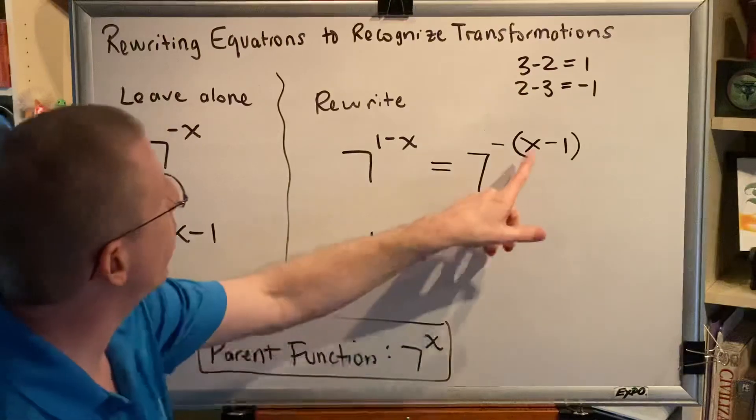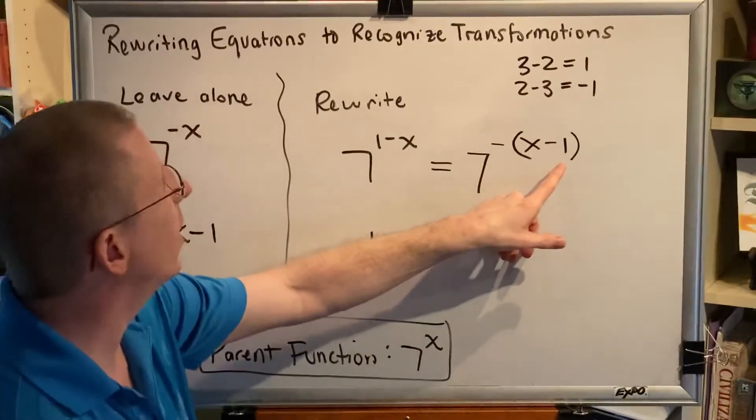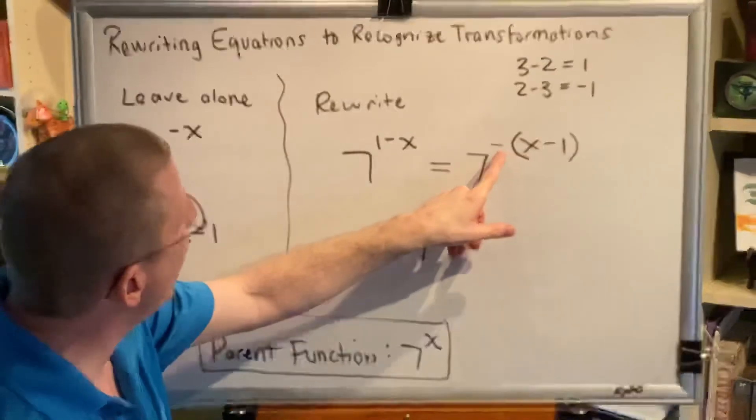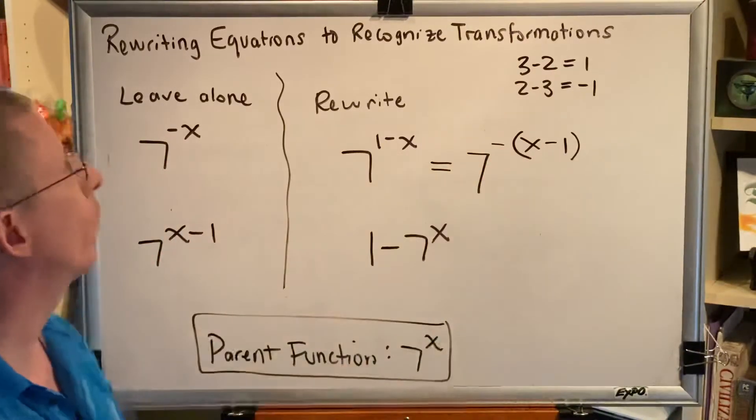The x has been replaced with x subtract 1, which is indicative of a shift to the right one space, and the negative out front multiplying is indicative of a horizontal reflection.